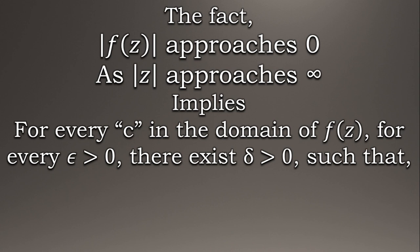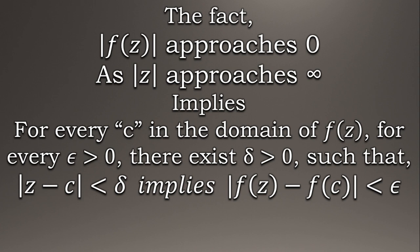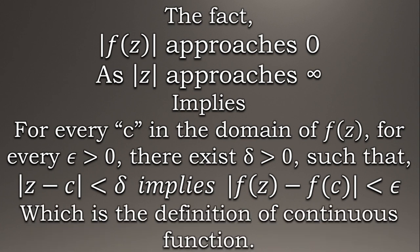Such that distance between z and c is always less than delta, which implies distance between f(z) and f(c) will always remain less than epsilon. And this quality makes our function a continuous function, which will help us move further in the proof.